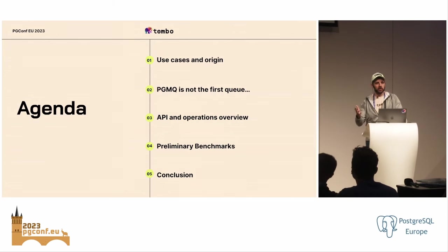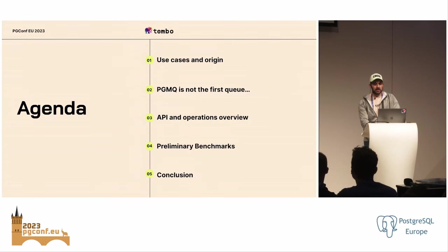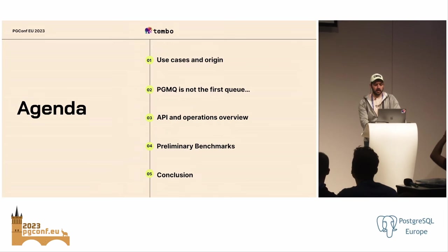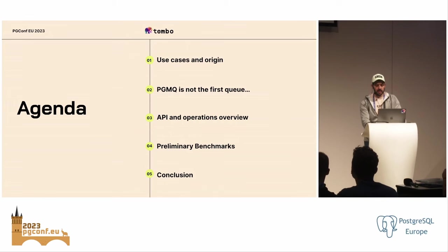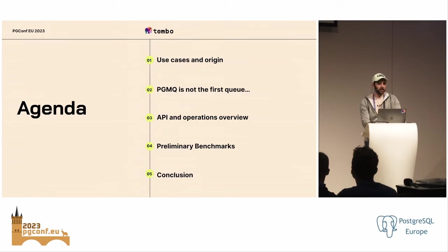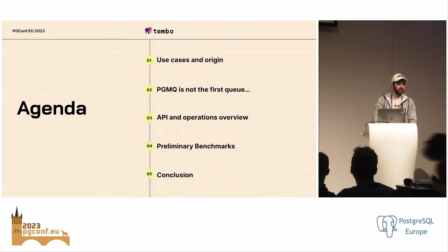First we're going to walk through the origin story — how did this project come to be — and then some other use cases, maybe why you would use a Message Queue. Message Queues on Postgres are super popular and a little bit controversial. There's a lot of projects out there. Then this project — we're going to walk through its API and some of the underlying operations. We've done a little bit of benchmarking, and I have some recommendations for how you could run this yourself. And if we have time, probably do a live demo.